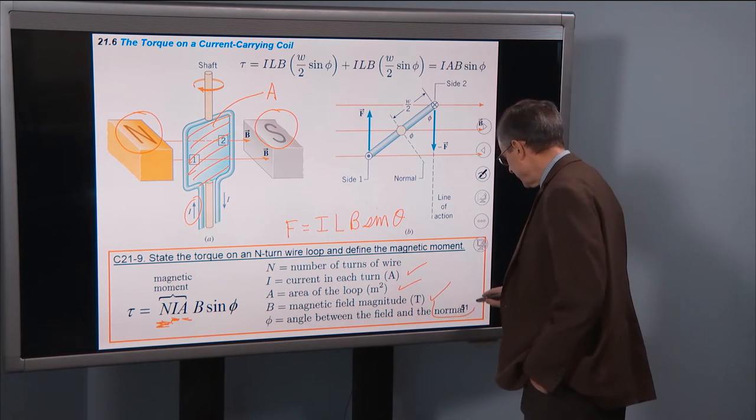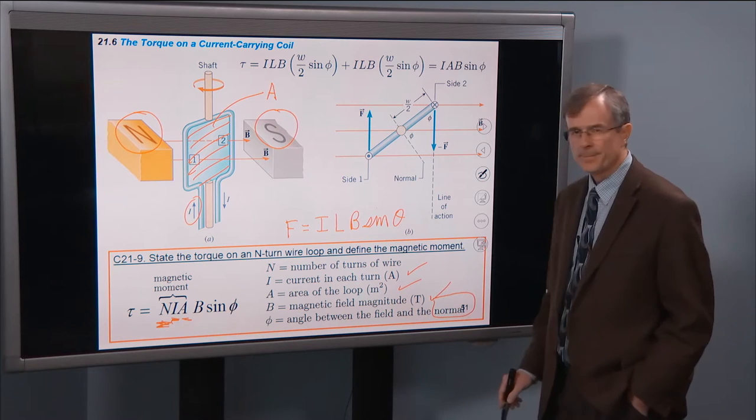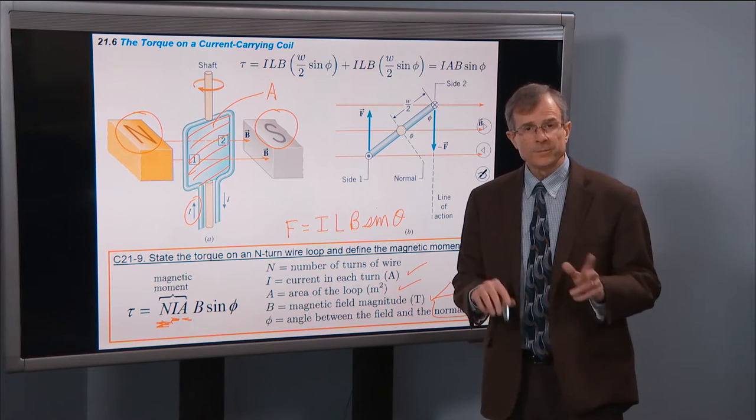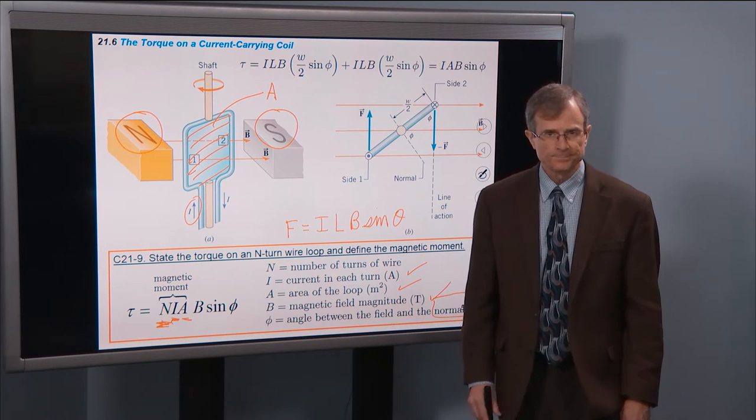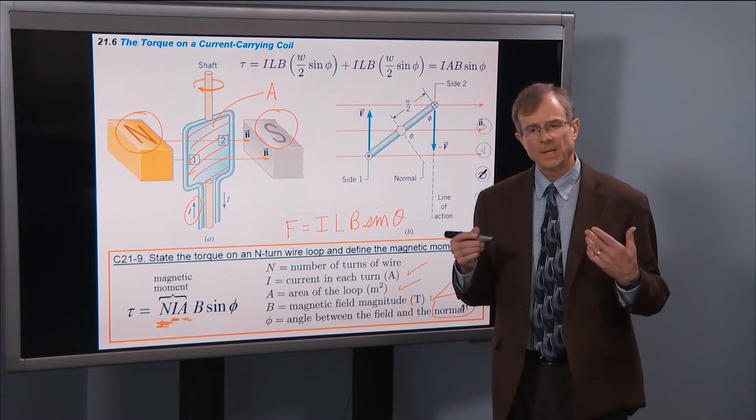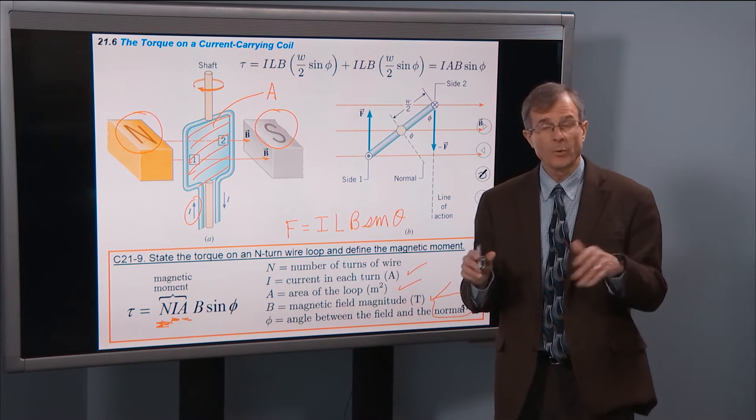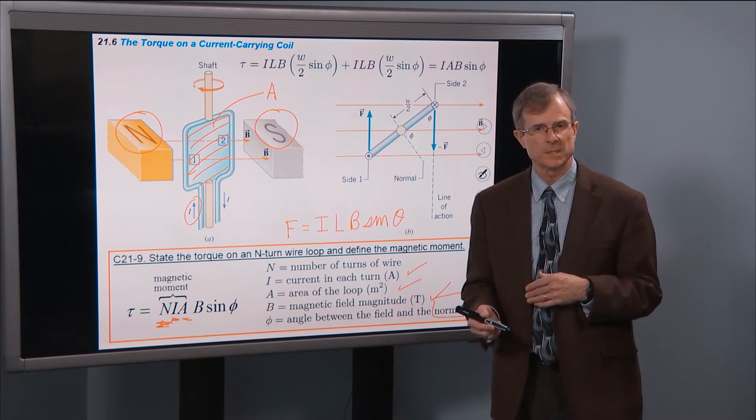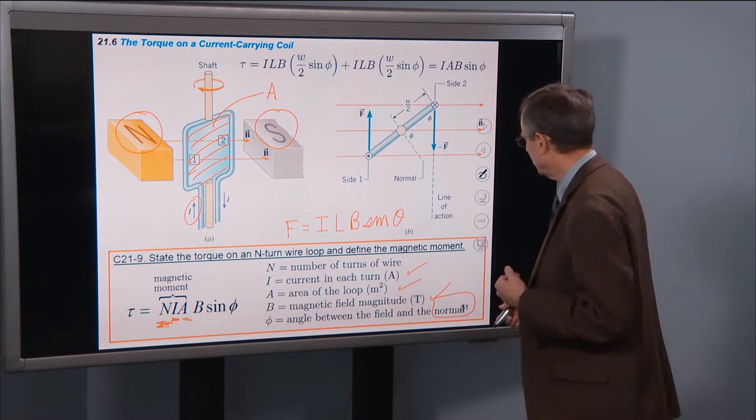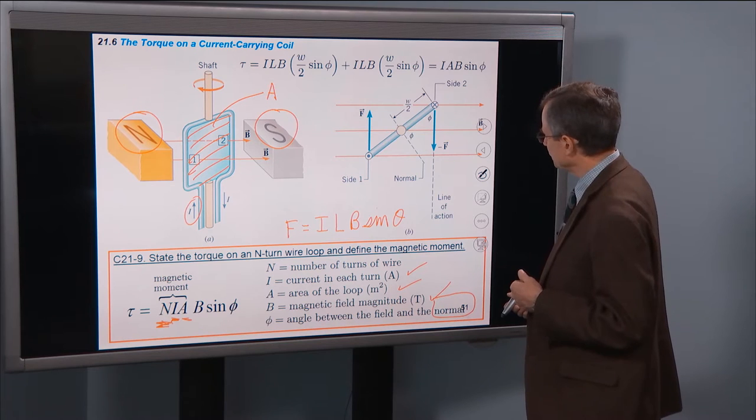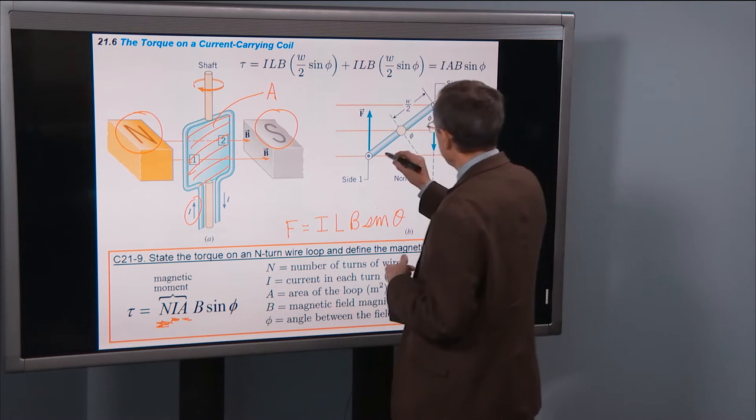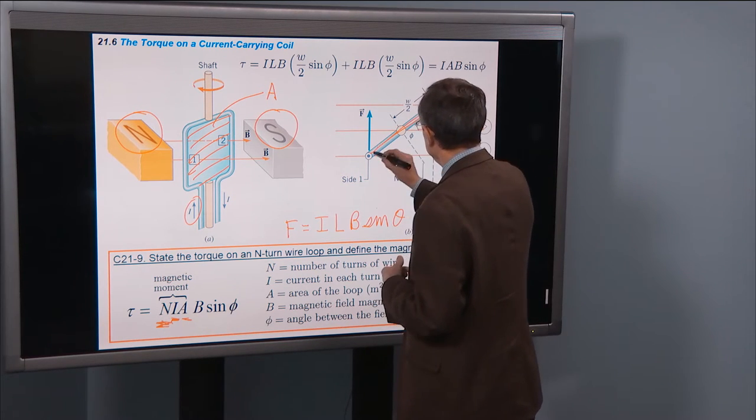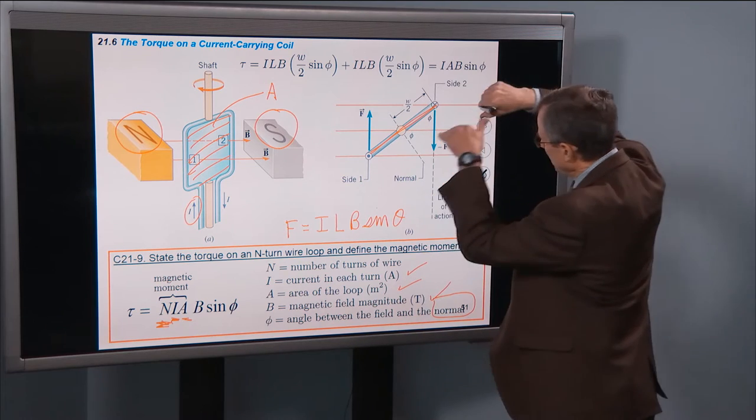So let me define what I mean by the normal direction. Normal in physics means perpendicular. And you always have to say a normal force is perpendicular to the surface on which it sits. So normal means perpendicular.